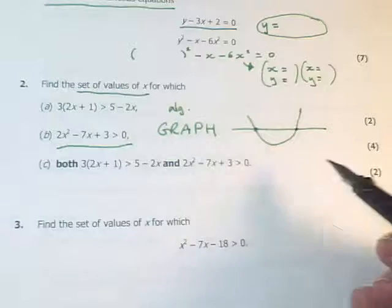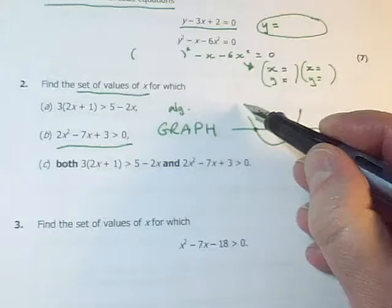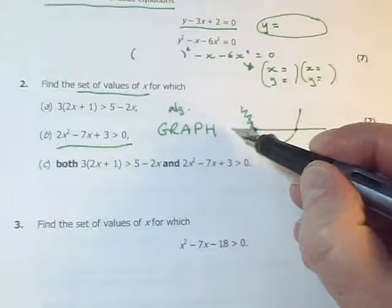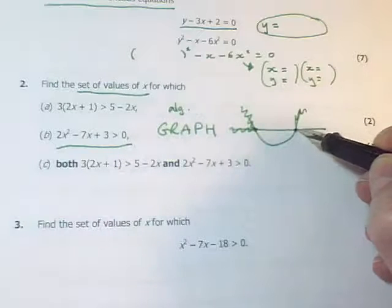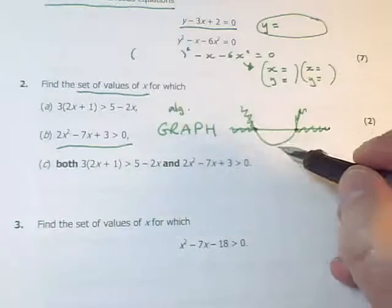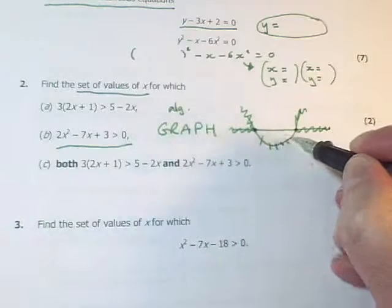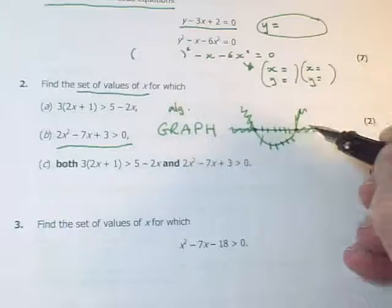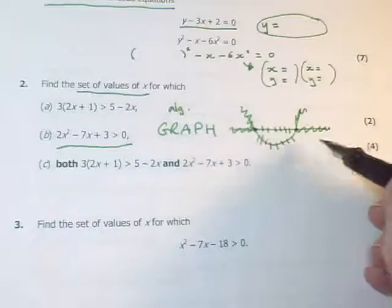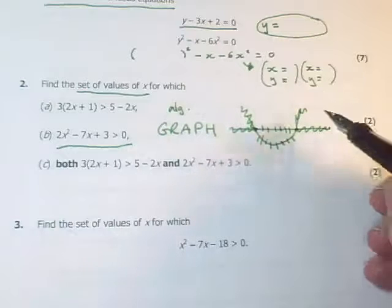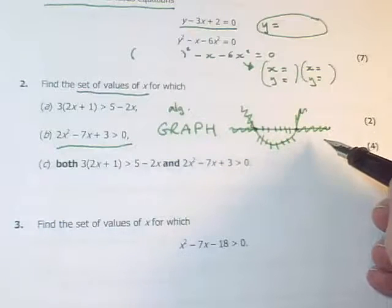Then you decide which bits of the graph you want. Do you want these edgy bits like this, in which case you'll want these bits of the x-axis? Or do you instead want this bit here, in which case you'll want this bit of the x-axis? So there'll either be one section or two sections of the graph that you want, and you write down your answer accordingly.